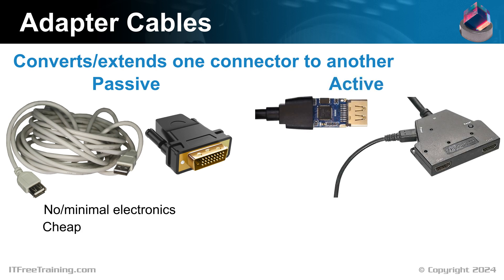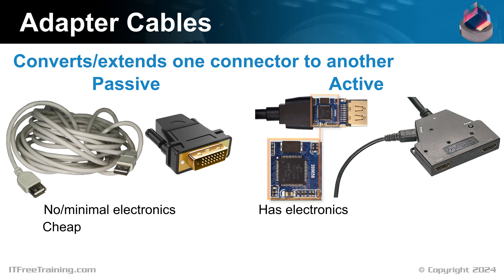The other type is active. Active cables have additional electronics in the cable or the adapter. These additional electronics convert and/or boost the signal. In the case of conversion, the input signal is completely recreated and output as a new signal. In the case of boosting, the signal is amplified. Either of these allow the cable to be longer in length.